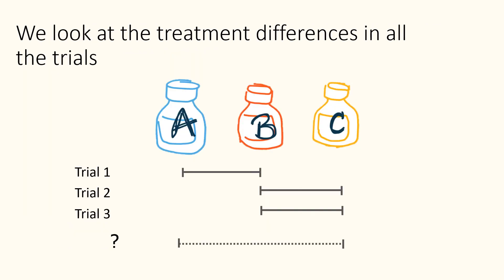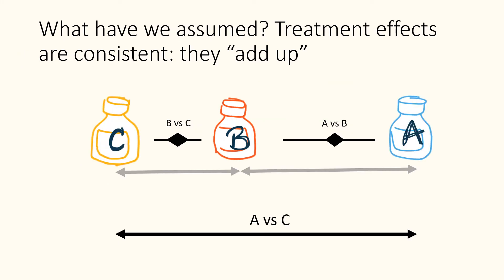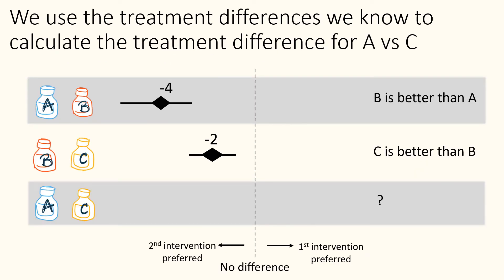So how do we do this? We have evidence from trials of A versus B and B versus C, and we want to know the effect of A versus C. We make the assumption that treatment effects are consistent — that if you add together the treatment effects of A versus B and B versus C, you will estimate the effect of A versus C. We then use the treatment difference we know to calculate the unknown treatment difference.